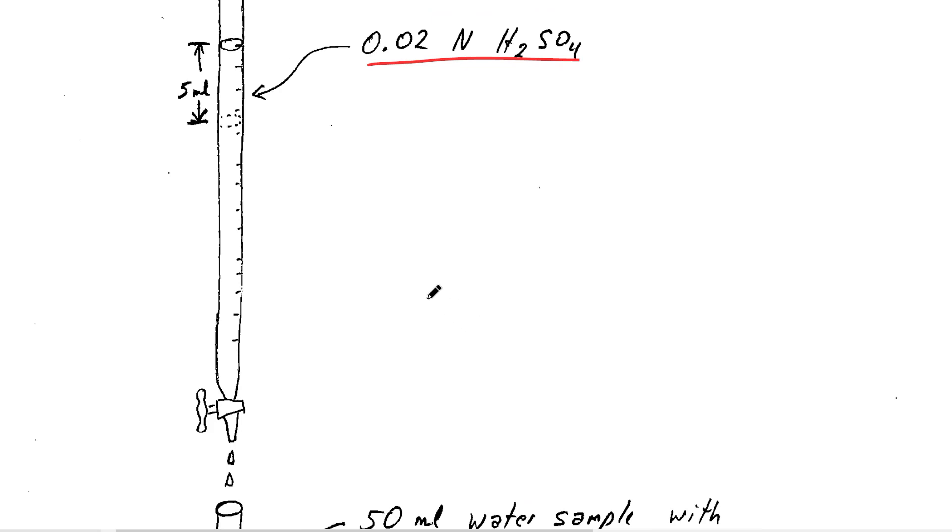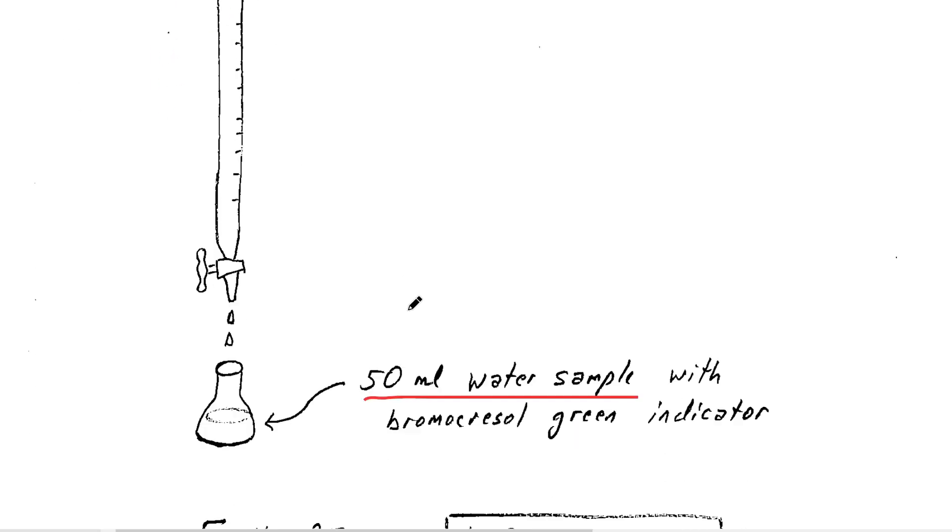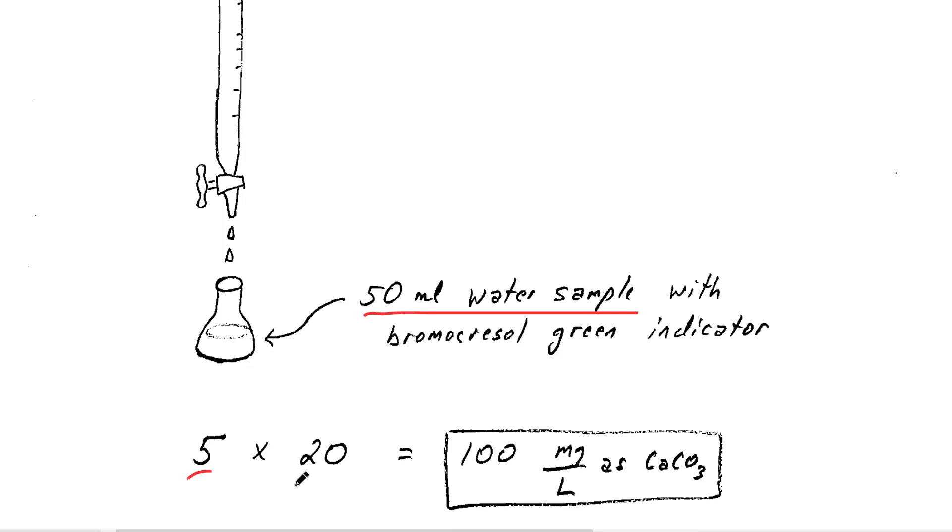You can watch that indicator change from blue to yellow and record the volume that you have dropped into the solution. Multiply that volume in milliliters times 20 and you end up with 100 milligrams per liter as calcium carbonate. And there you go, you're done.